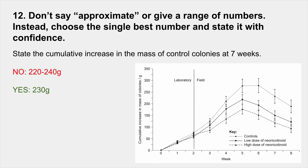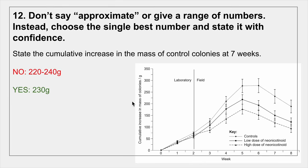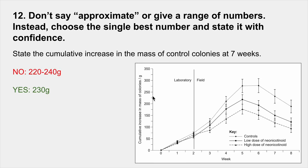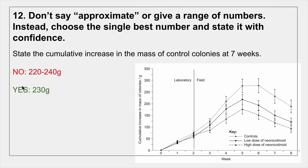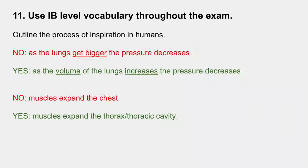Number 12: don't say 'approximately' or give a range of numbers. Instead, choose the single best number and state it with confidence. I see students all the time giving a range of values because they don't know exactly where the line crosses the axis. Don't do that — choose one single number, put it out there with the unit.